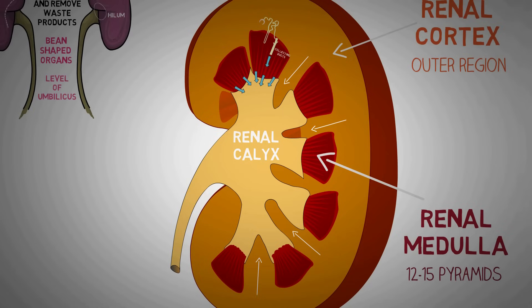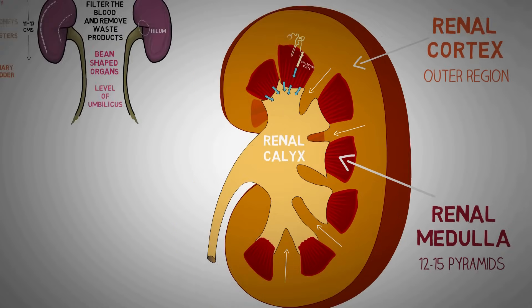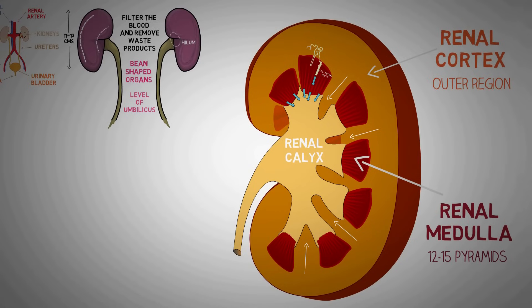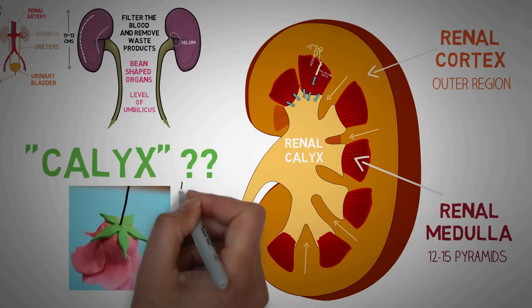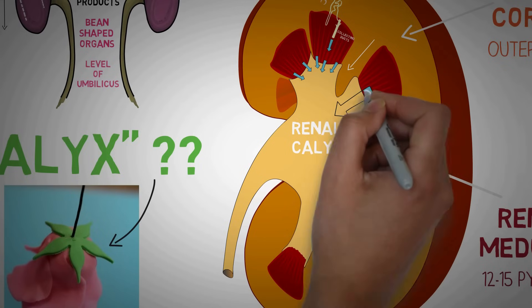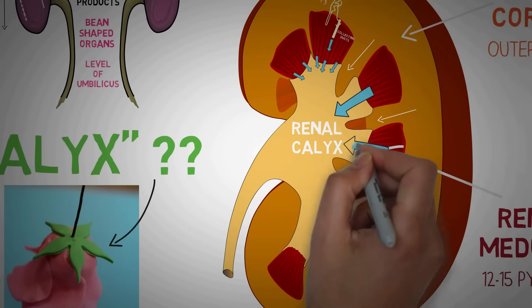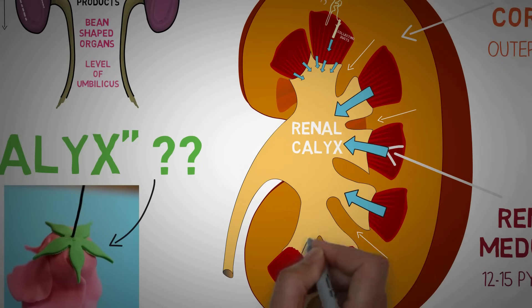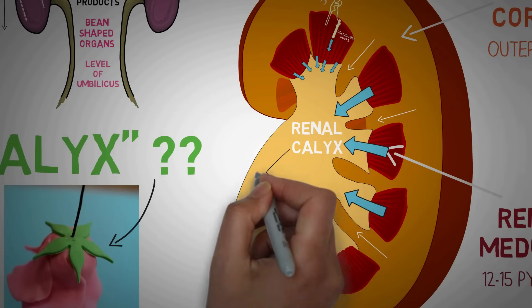The word calyx is actually a part of a flower. If you look at the shape of a calyx of a flower, you can see why this part of the kidney is known as the renal calyx. The renal calyx receives the urine from each of the renal medullary pyramids and ultimately drains all of this urine into the ureter.